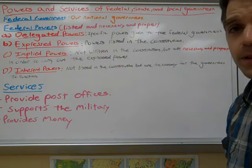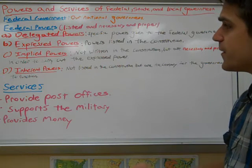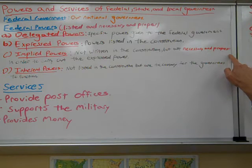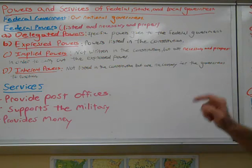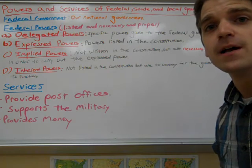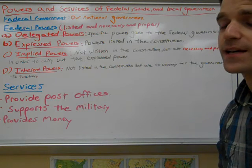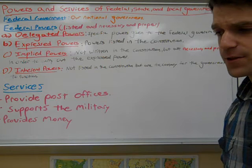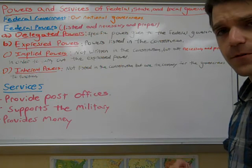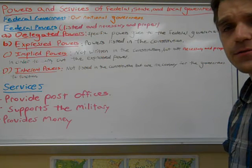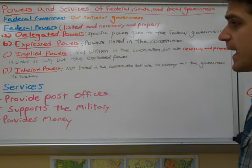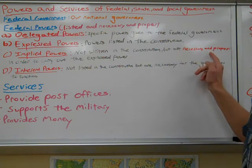The next type is implied powers. They're not written in the Constitution, but they are necessary and proper in order to carry out the express powers. Part of the Constitution states that there are some laws that are necessary and proper for the federal government to carry out — this is called the necessary and proper clause.